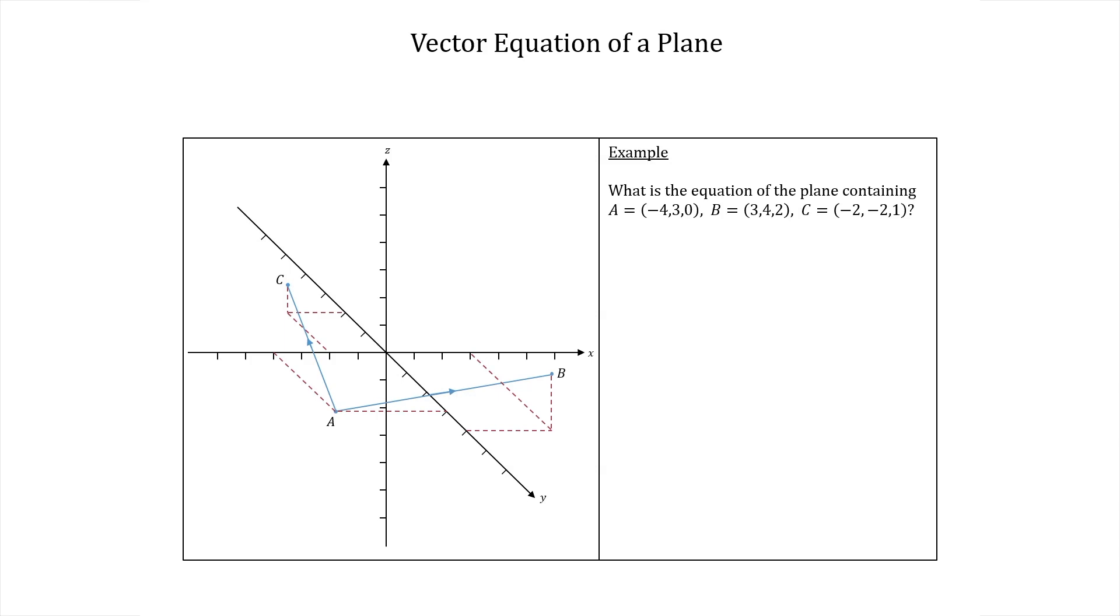So the vector from a to b is the vector from (-4,3,0) to (3,4,2).